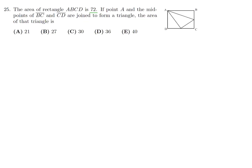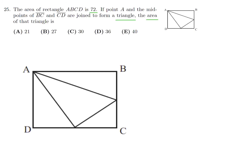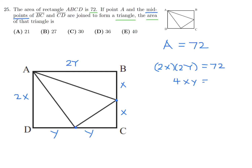The area of rectangle ABCD is 72. If point A and the midpoints of BC and CD are joined to form a triangle, what is the area of that triangle? Let's label the sides: the midpoints divide BC into X and X, and CD into Y and Y, so the full rectangle is 2X by 2Y. Therefore 2X times 2Y equals 72, giving 4XY equals 72, so XY equals 18.